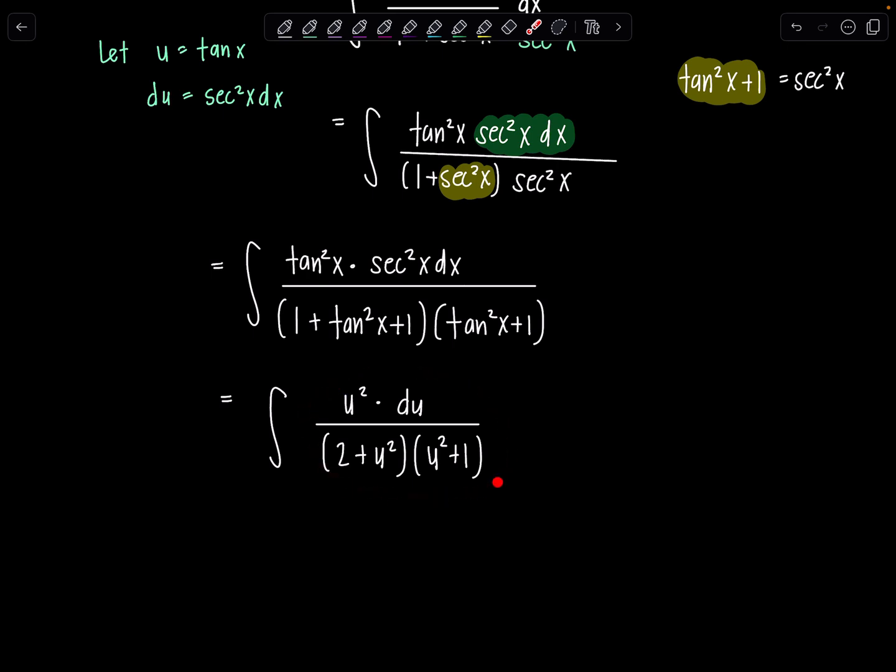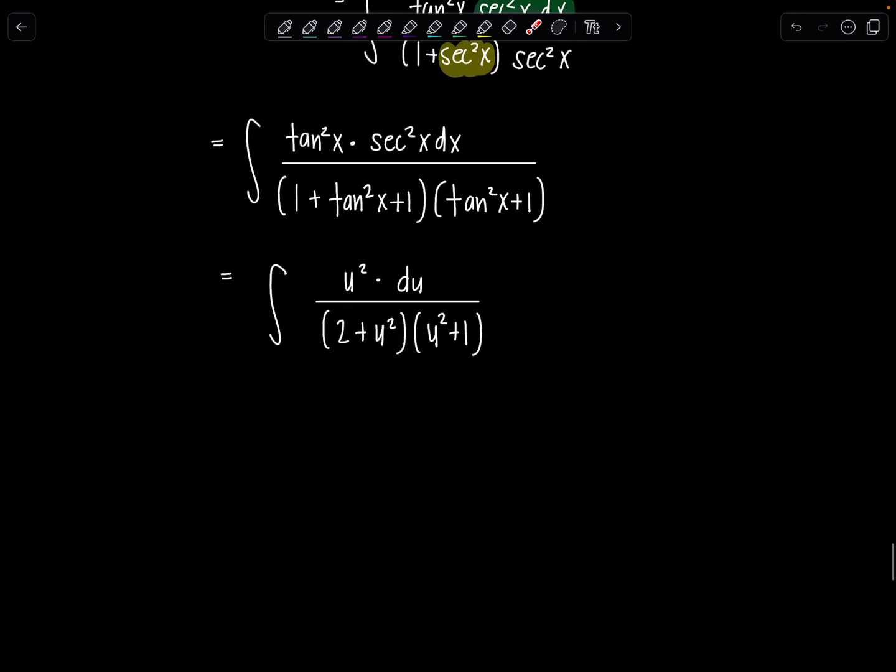My integrand has become basically a rational function and it's already bottom heavy. Degree of the denominator is higher than the degree of the numerator. Let me go ahead and see if I can find the partial fraction decomposition and integrate from there. So it's partial fraction time. The denominator is already fully factored over real numbers. So we have u squared over u squared plus two, u squared plus one.